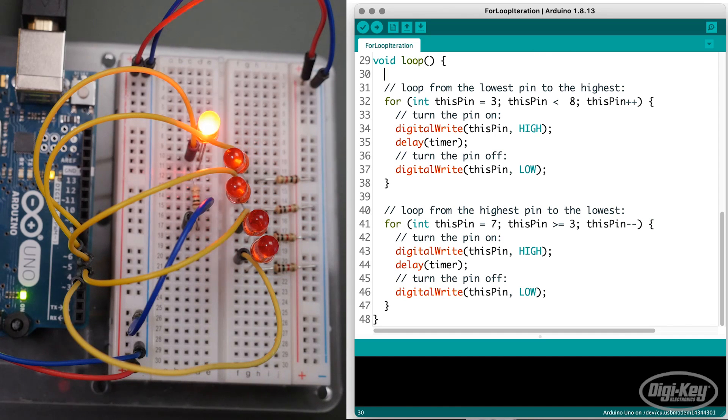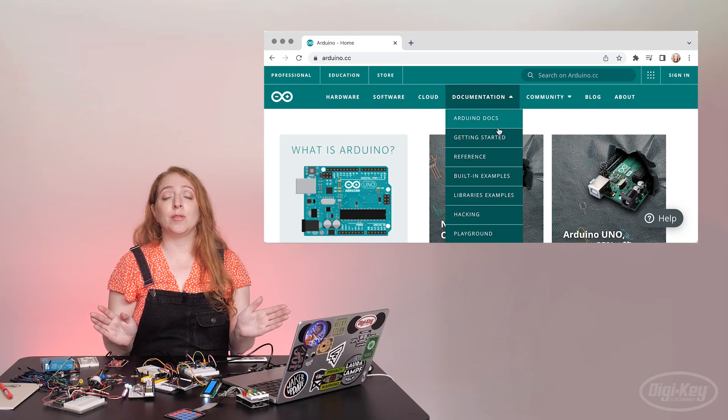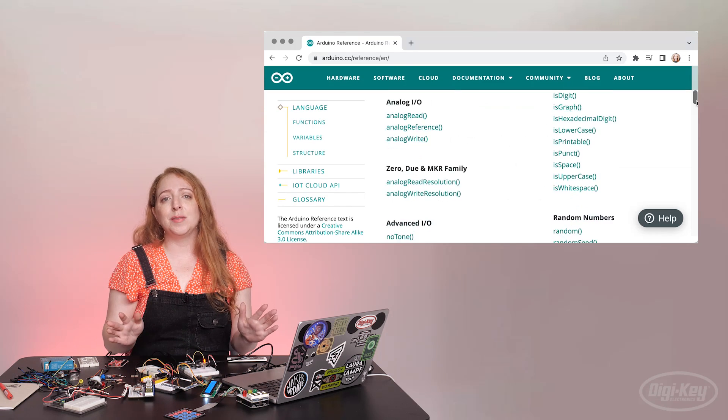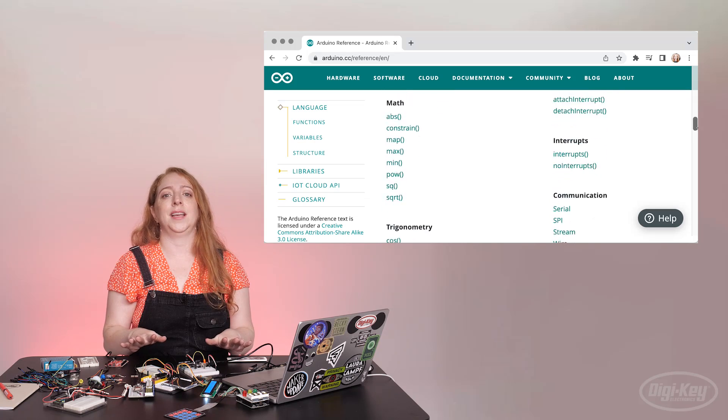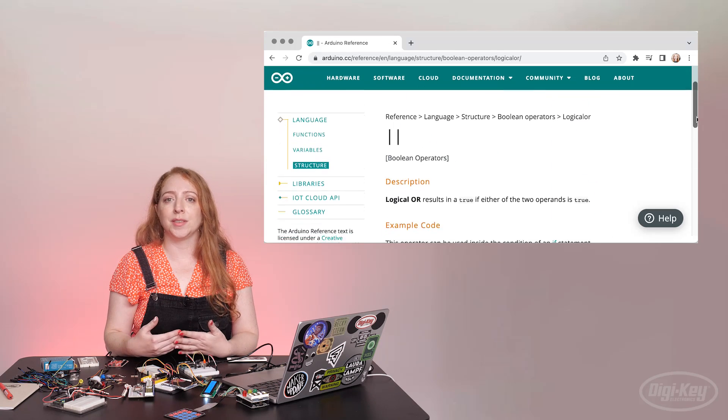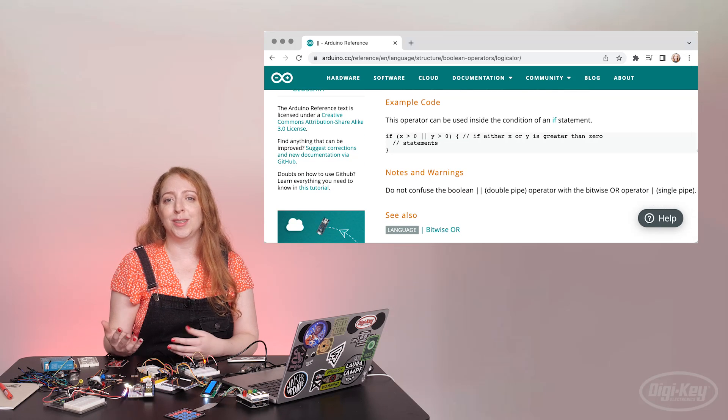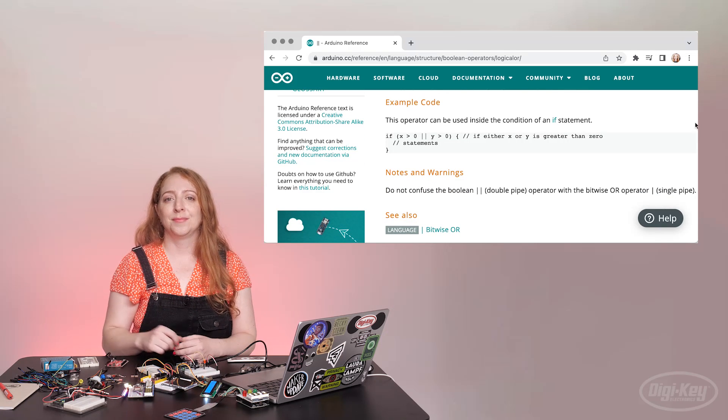I know this can all seem pretty overwhelming at first, but don't forget that you can always look stuff up online when you get stuck. The Arduino site has an excellent reference section where you can find explanations and examples of every part of the code and a community forum where you can get help with your own projects. I've put links to some resources in the description. DigiKey's got more videos on Arduino to watch while you wait for next time when we'll cover inputs and sensors.